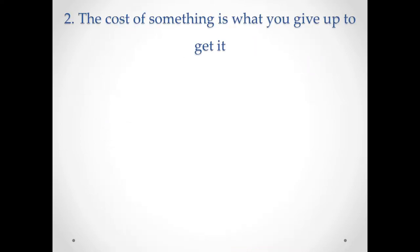The second principle is: the cost of something is what you give up to get it. Because people face trade-offs, making decisions requires comparing the costs and benefits of alternative courses of action. Consider the decision to go to school — the largest cost is your time. When you spend a year attending lectures, reading textbooks, and writing papers, you cannot spend that time working at a job. College athletes who can earn millions by dropping out and playing professional sports are well aware that their opportunity cost of college is very high.